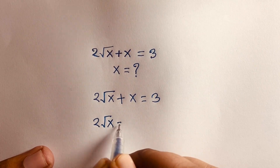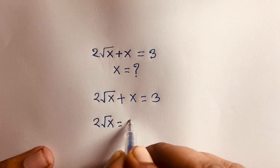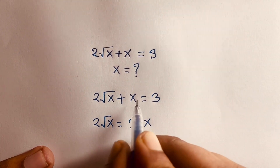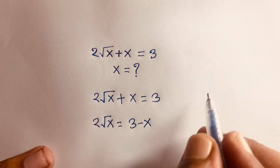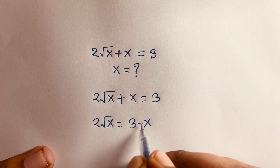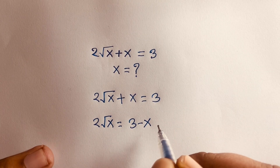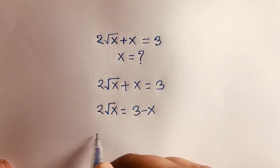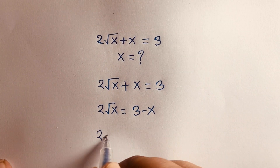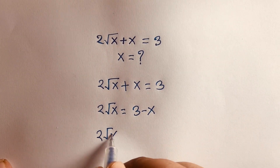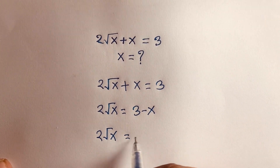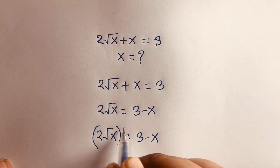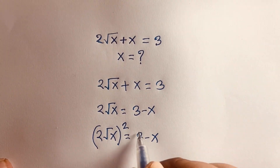I can rearrange this equation: 2√x = 3 - x, by moving x to the right side. So here we have 2√x on the left and 3 - x on the right. Now I'll square both sides.